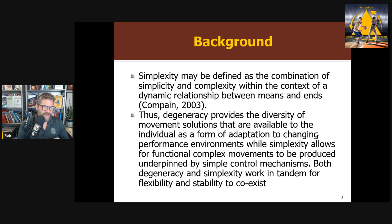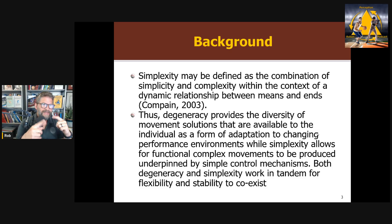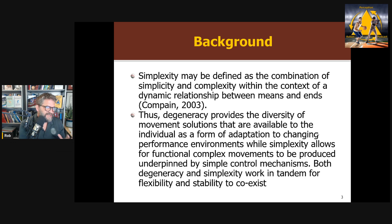The example they use in the paper is a good one: the famous Kelso finger wiggling task, where you're asked to wiggle fingers in a certain phase relationship — in phase or antiphase. What they show is that a very simple informational constraint — providing a metronome — allows people to learn very complex coordination patterns that they couldn't do otherwise. So it's going from a simple constraint to produce a very complex pattern.